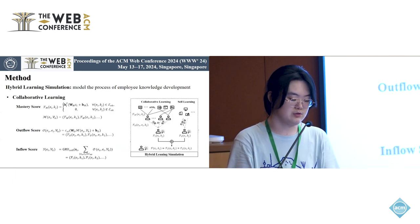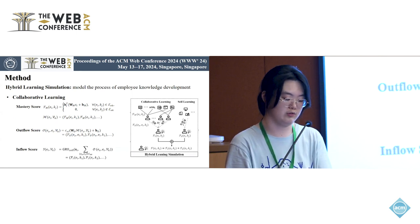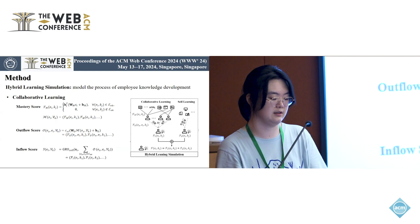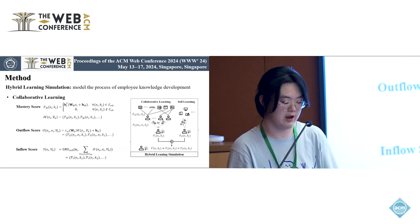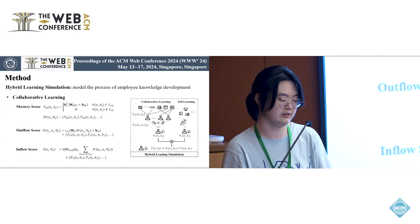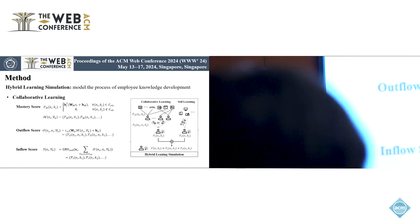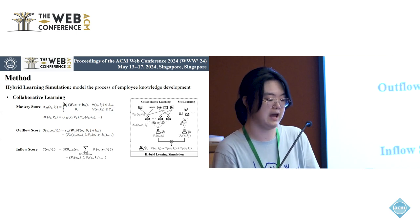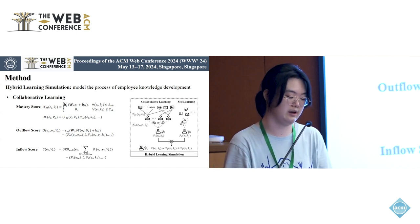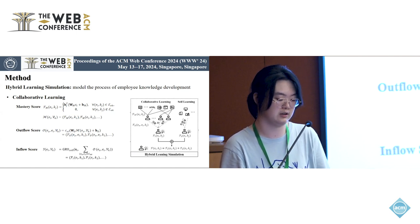In the real world, job knowledge learning is in the form of hybrid learning, including collaborative learning and self-learning. We model the collaborative learning process in terms of knowledge flow. Specifically, the outflow and inflow score functions are invented to quantify an employee's ability to transfer and receive concrete knowledge. Collaborators can only transfer the knowledge they have acquired. Hence, we designed the S3 score function by the dot product operation.